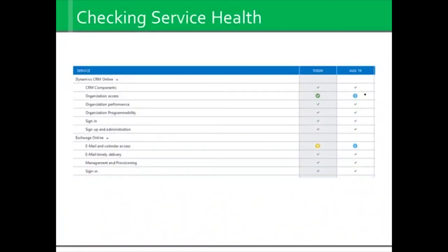Office 365, like anything else, has its good days and its bad days — 99.9% of the days are very, very good. But if you think something seems off, maybe it's a little slow to respond or you're getting an error where you least expect it, you want to go and check Service Health in the Admin Console. It gives you about a week's worth of data. The green check mark means all is good, but there might be an information notice, a new resolve, or a restoring service indicator meaning something went wrong and they're fixing it. You'll be able to tell pretty quickly if it's you, your machine, or Office 365.